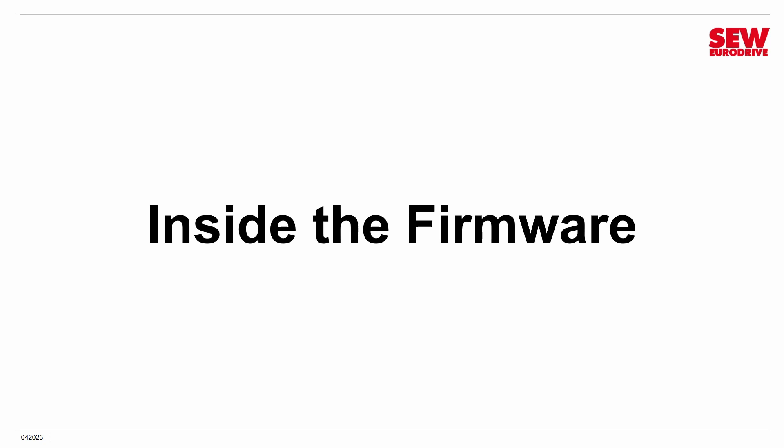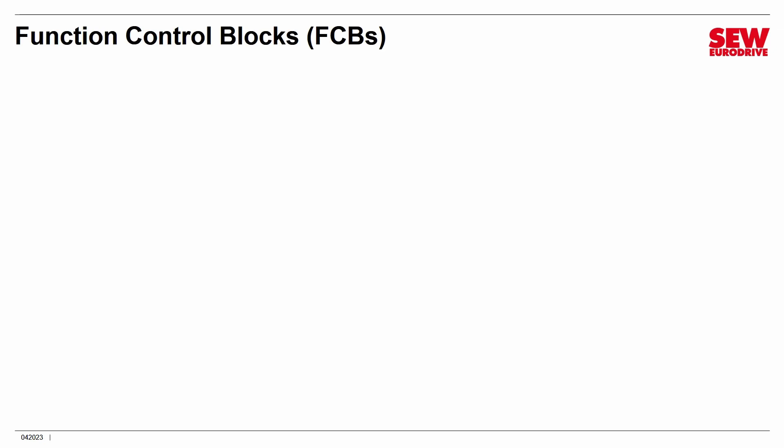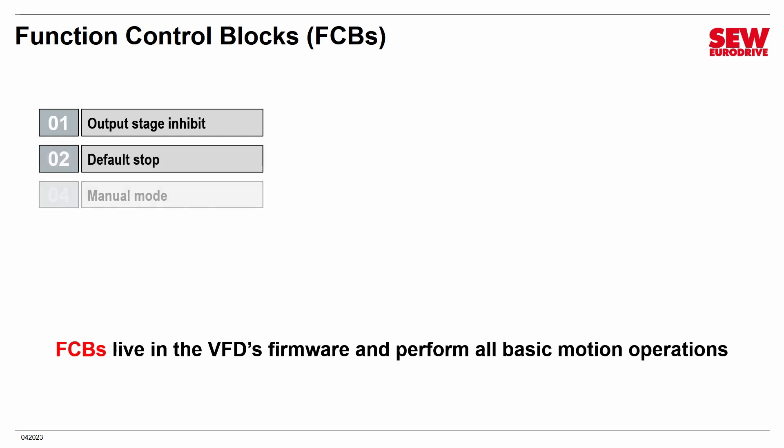Let's come back to Movidrive Technology and talk about what's inside the firmware. This firmware is actually in all three products — it's not just in Movidrive Technology — and it works pretty much the same way. It's also in the decentralized products. So I'm giving you the background to understand what's going on inside all these products, but we're only going to focus on it from the perspective of Movidrive Technology. We call this magic firmware Function Control Blocks, abbreviated FCB. FCBs are those firmware routines that do the basic things, and here is a master list of them.